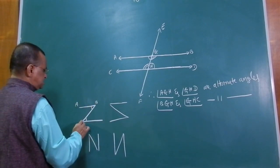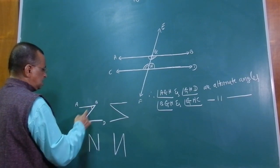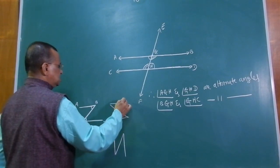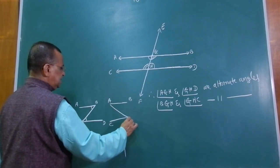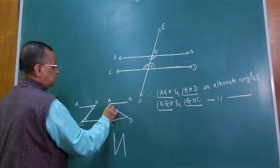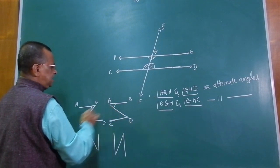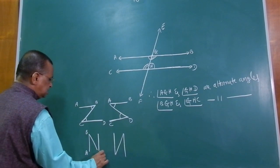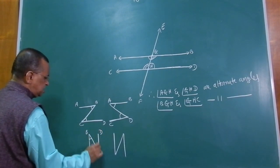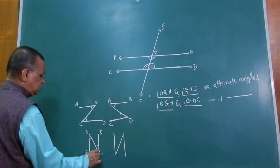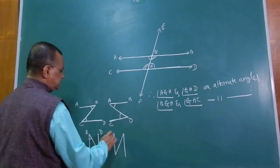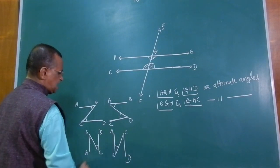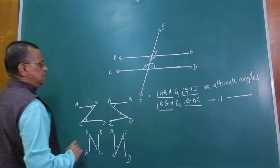For example, if we label points A, B, C, D, alternate angles are angle ABC and angle BCD. In another case, labeling the same points A, B, C, D differently, alternate angles are angle BAD and angle ADC. In yet another diagram with points A, B, C, D, angle ABC and angle BCD are again alternate angles. You must be able to identify these alternate angle pairs in any configuration.